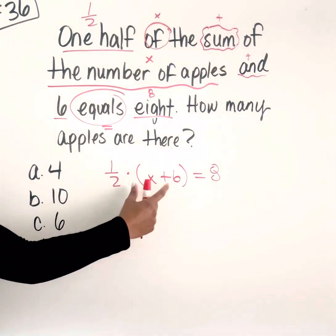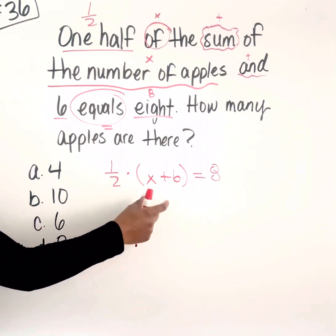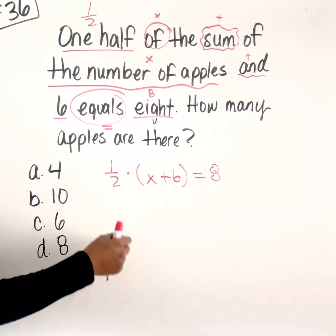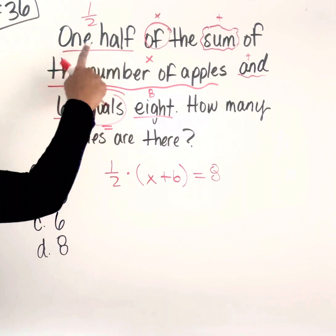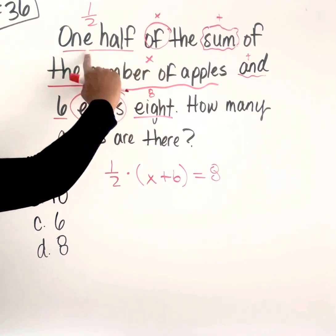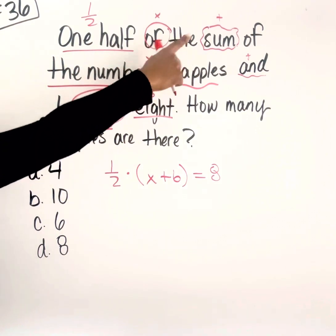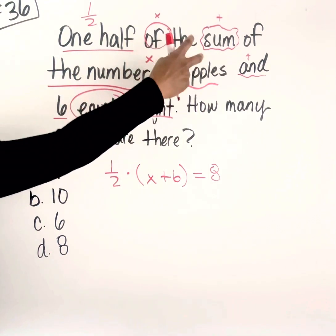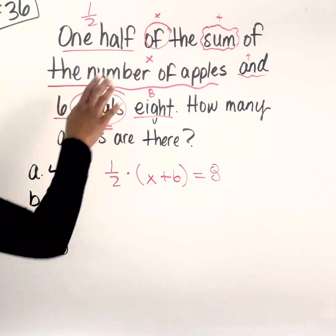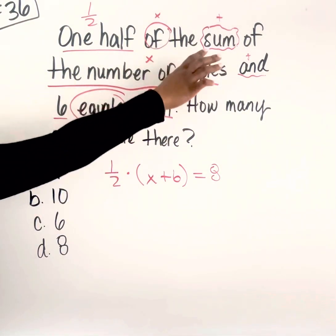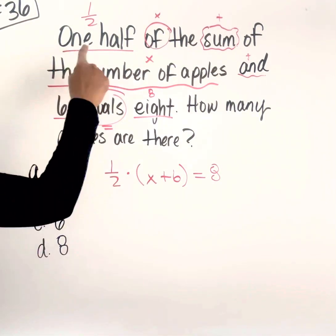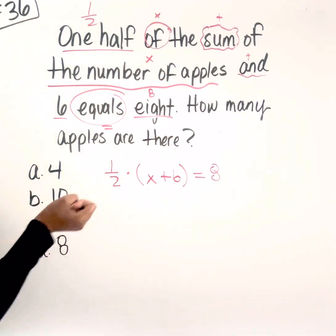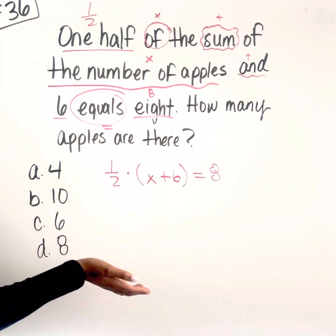This part is really where people make the most mistakes. So just be aware: if you have 'one half of' — something times — and then 'the sum of', you see how we have two operations back to back? That means whatever follows the first operation needs to be grouped together in parentheses, because we're taking half of the group of items versus just one thing.